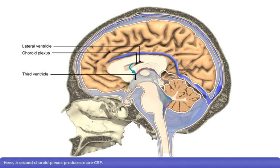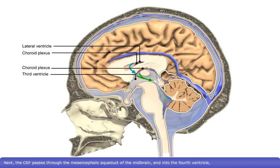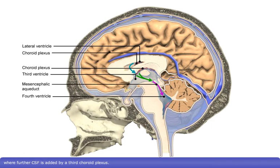Here, a second choroid plexus produces more CSF. Next, the CSF passes through the mesencephalic aqueduct of the midbrain and into the fourth ventricle, where further CSF is added by a third choroid plexus.